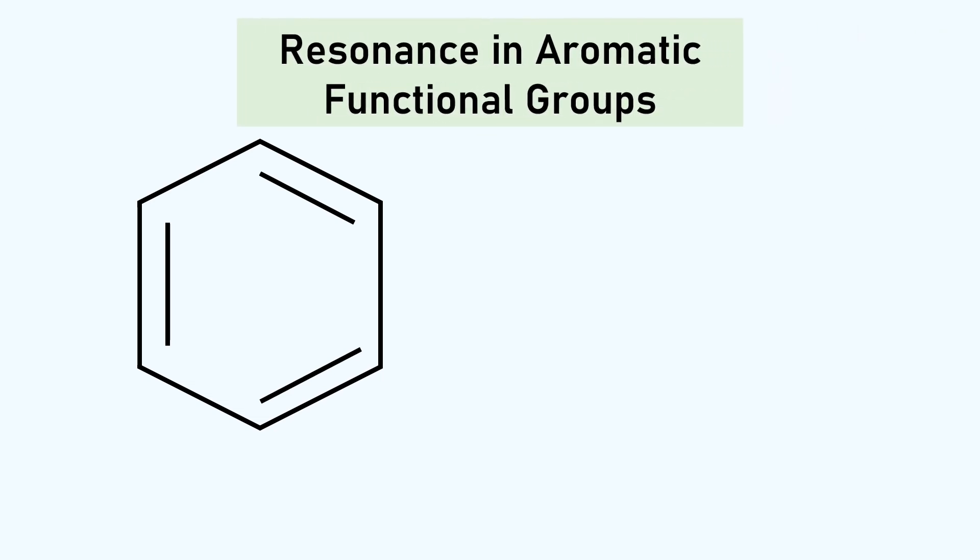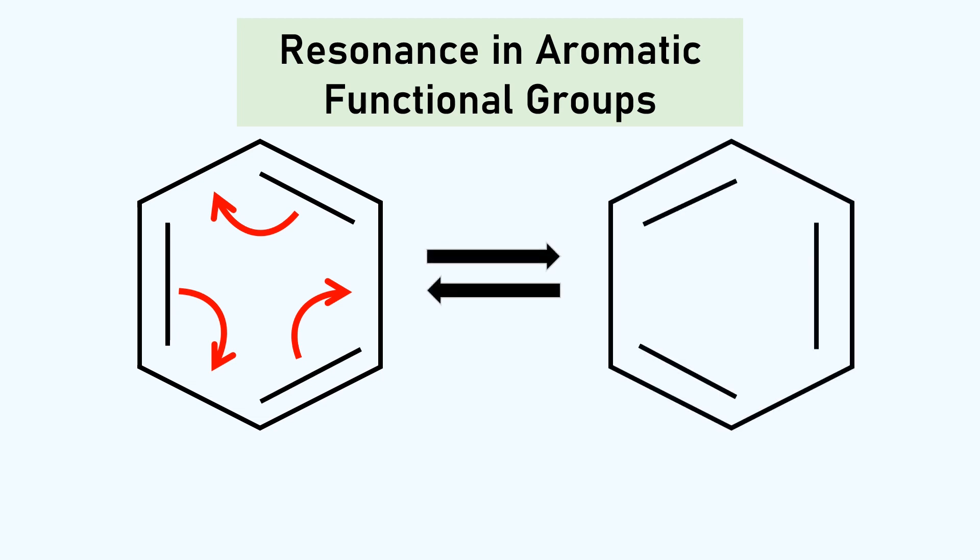Conjugated systems exhibit resonance. You can find my lecture on resonance here, and in the description. The pi electrons can be drawn, or moved, between adjacent carbon-carbon bonds around the ring. Here is the new resonance structure.